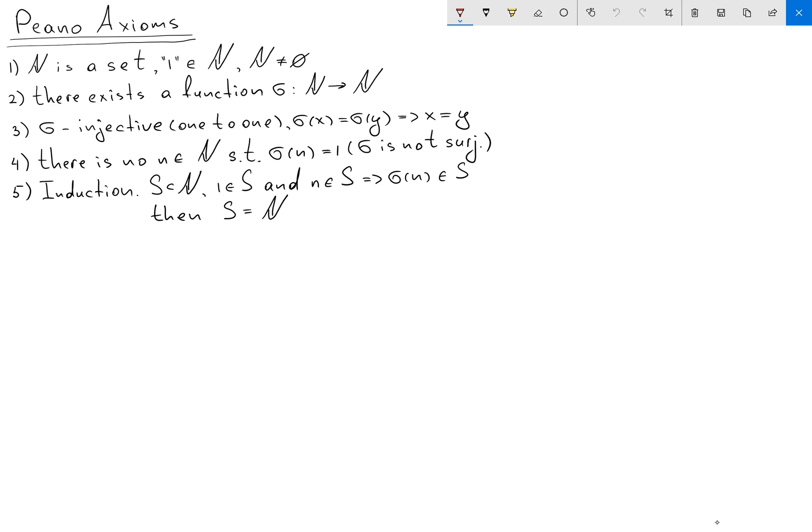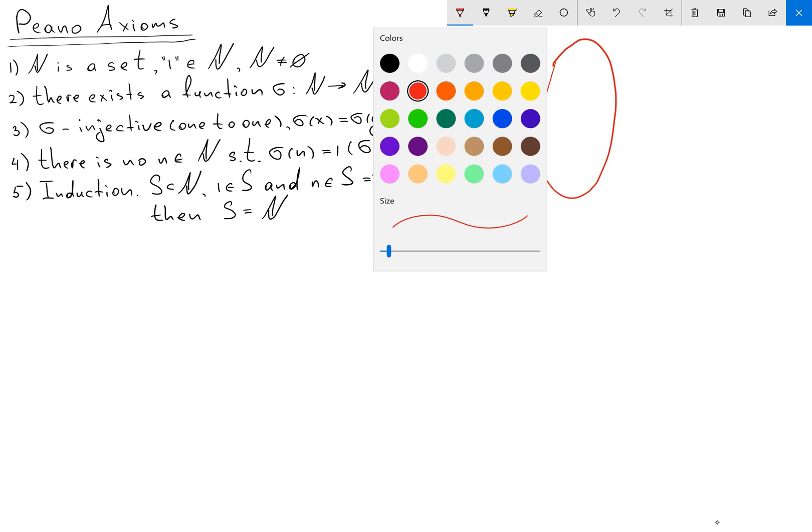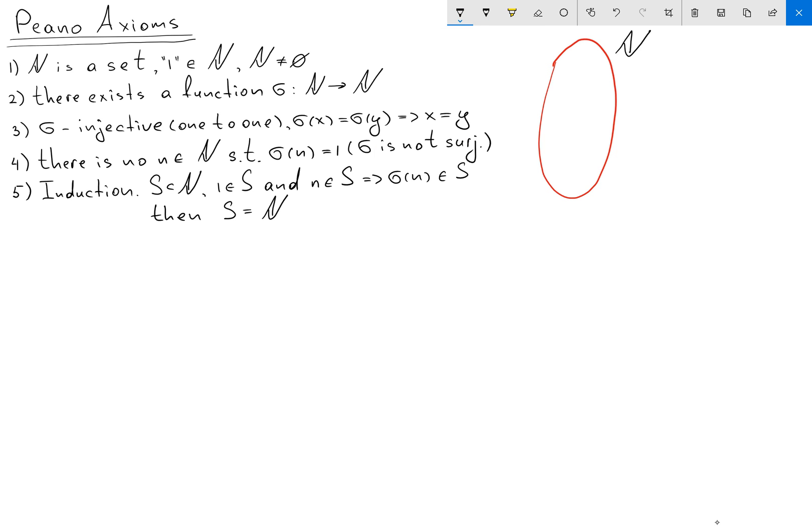Hello guys, in this video I want to continue to talk about Peano axioms. So let's show how we actually can construct the natural numbers from Peano axioms. Our first axiom gives us a set N, and for this set N we have the element 1 that belongs to this set. From here we can conclude that our set N is not empty.